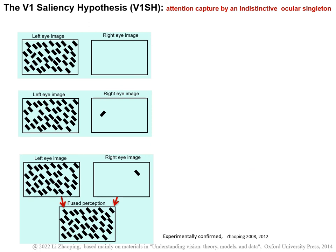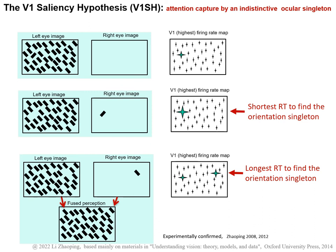Now we can do another experiment in which the uniquely oriented bar in each of these monocular images, and therefore also in the fused image, is replaced by another bar that's parallel to all the other bars. Now all bars in the perceived image are parallel to each other. We can ask observers if they can tell whether any of these bars is in a different eye from the other bars — and indeed observers often cannot tell. This confirms that they are indeed blind to the eye of origin of visual inputs. This is particularly so when different bars have different brightnesses or luminances. However, the saliency effect by the ocular singleton is still present regardless of whether the bars have different luminance or brightness.